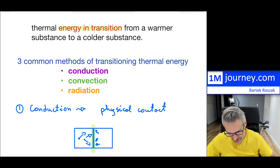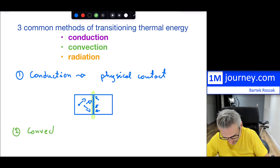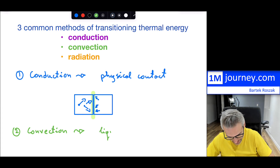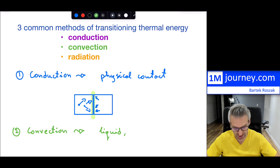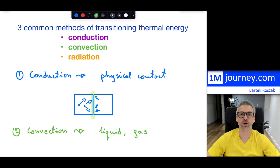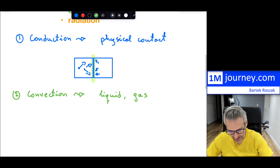Convection is a little bit harder to explain. Convection does not happen between solids — it happens within liquids or within gases. There can be some conduction along the way that starts the process. To explain it, we also need to talk a little bit about density.